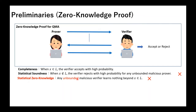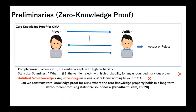So our question is as follows: Can we construct a zero-knowledge proof for QMA where the zero-knowledge property holds in the long term without compromising statistical soundness? Note that this question was first raised by Broadbent and Islam. In our work, we resolve this question affirmatively.